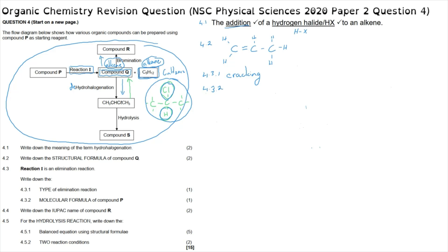Question 4.3.2 asks for the molecular formula of compound P. Compound P must have been the sum of the alkane product — C5H12 (five carbons and twelve hydrogens) — and compound Q, which we identified as having three carbons and six hydrogens (C3H6). So to find compound P we add C5H12 plus C3H6, giving a molecular formula of C8H18.